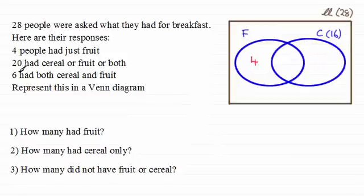Until I read the next statement, which is six had both cereal and fruit. So I now know that six must go in the overlap here to represent those that had cereal and fruit. And now that leaves me with 16 take away six, 10 that had cereal only or just cereal. I mustn't forget this outer region here for those that didn't have fruit or cereal. So we've got a total of four, six and 10, a total of 20. So that leaves me with 8 that didn't have fruit or cereal.